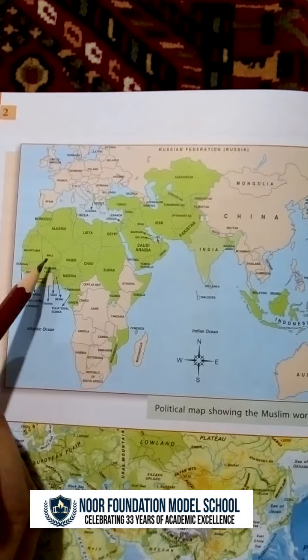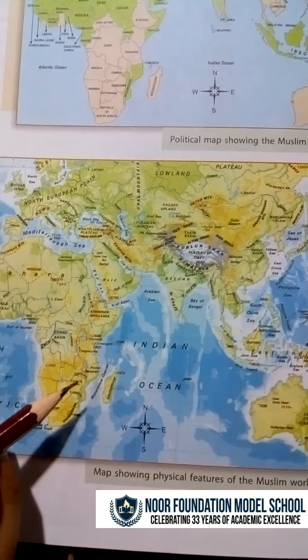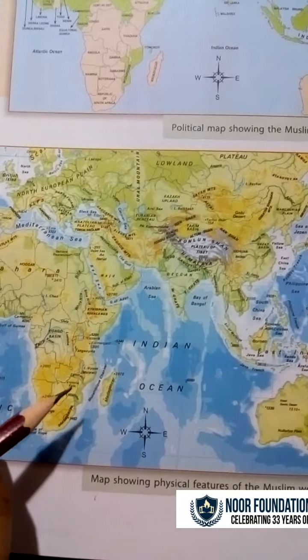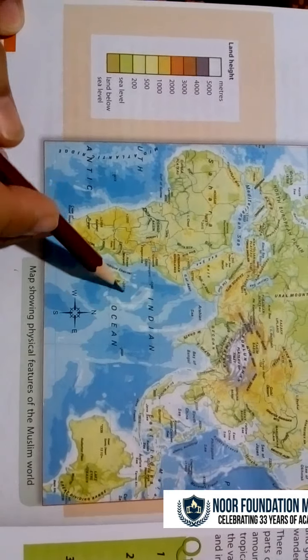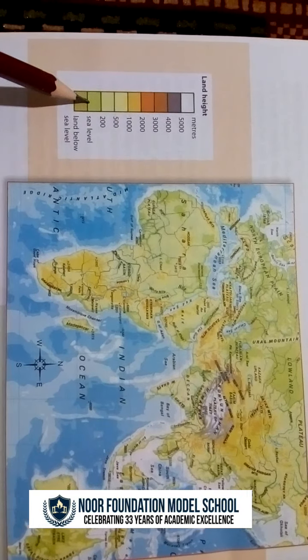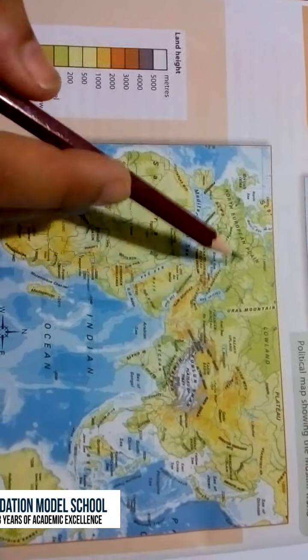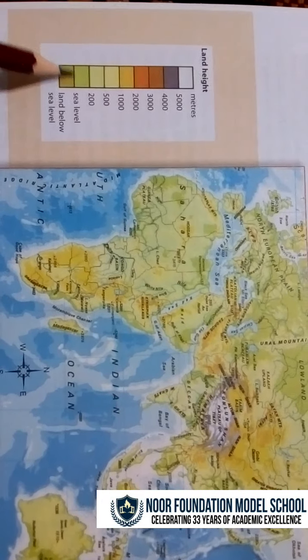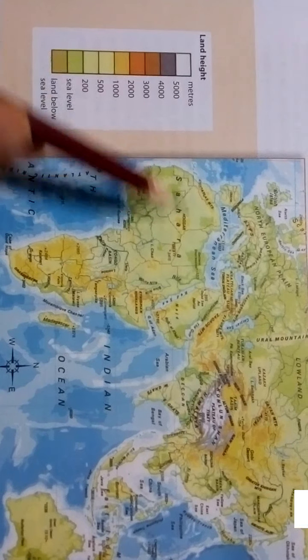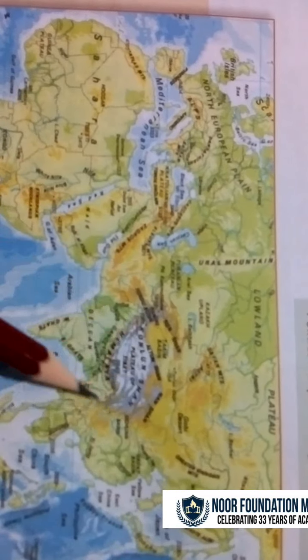The second map is the map showing physical features of the Muslim world. The land below sea level is shown in light green color. As the land goes up, these are mountain areas. You can see that most Muslim countries are at sea level or above sea level, in plain areas.